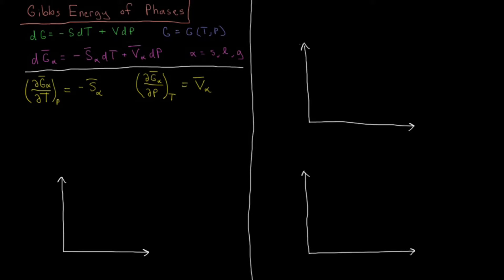We can make a few generalizations which are going to help us out. Generally, the molar entropy of a gas is greater than the molar entropy of a liquid, which is greater than the molar entropy of a solid. This is fairly intuitive: the atoms of a solid are rigidly locked into a lattice with not very much disorder. In a liquid, they stay cohered together in a small volume but are free to flow past one another. And for a gas, the atoms can fly around anywhere inside the container.